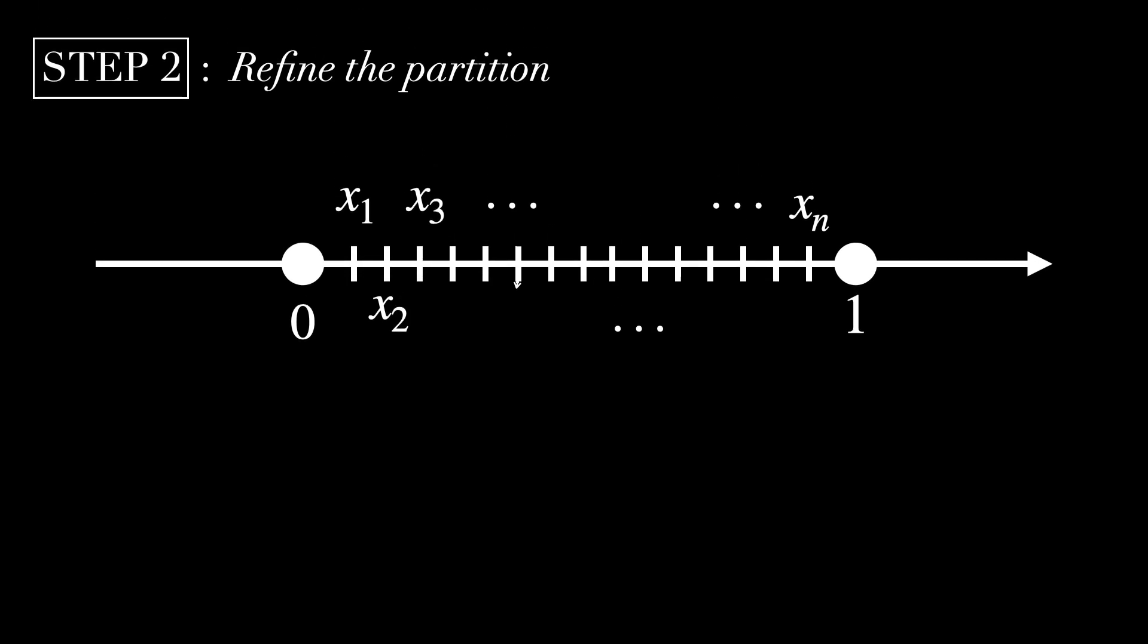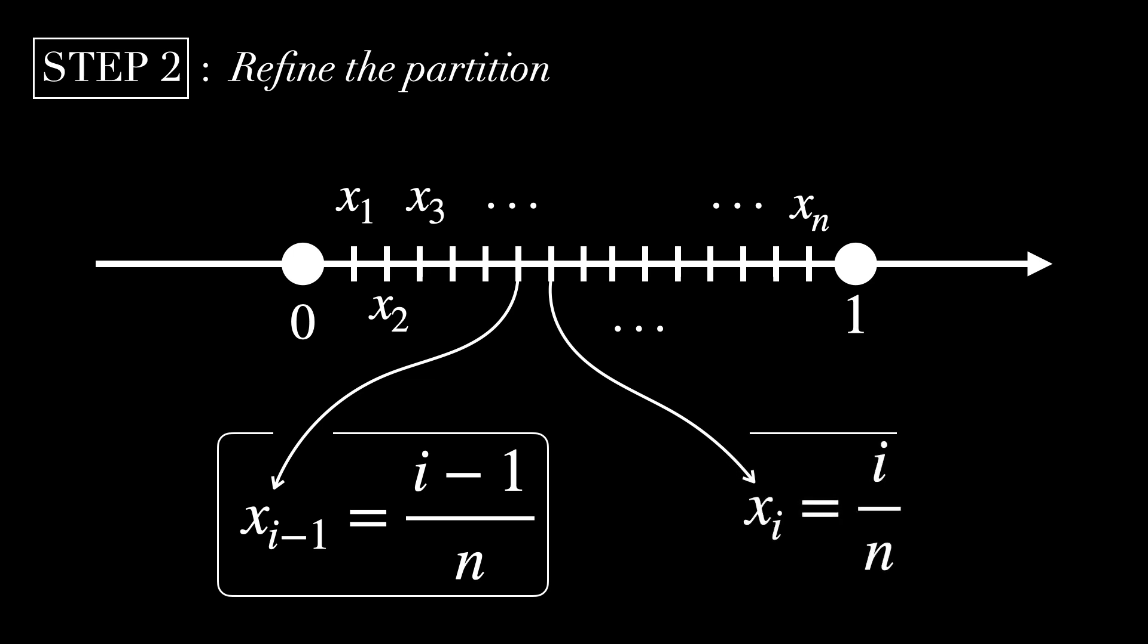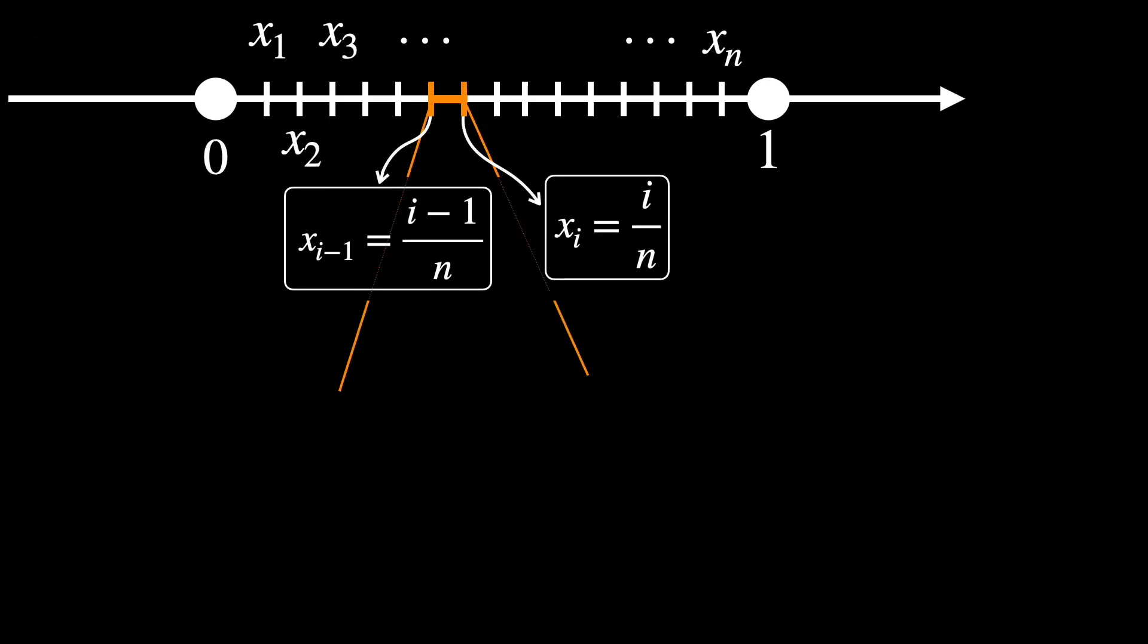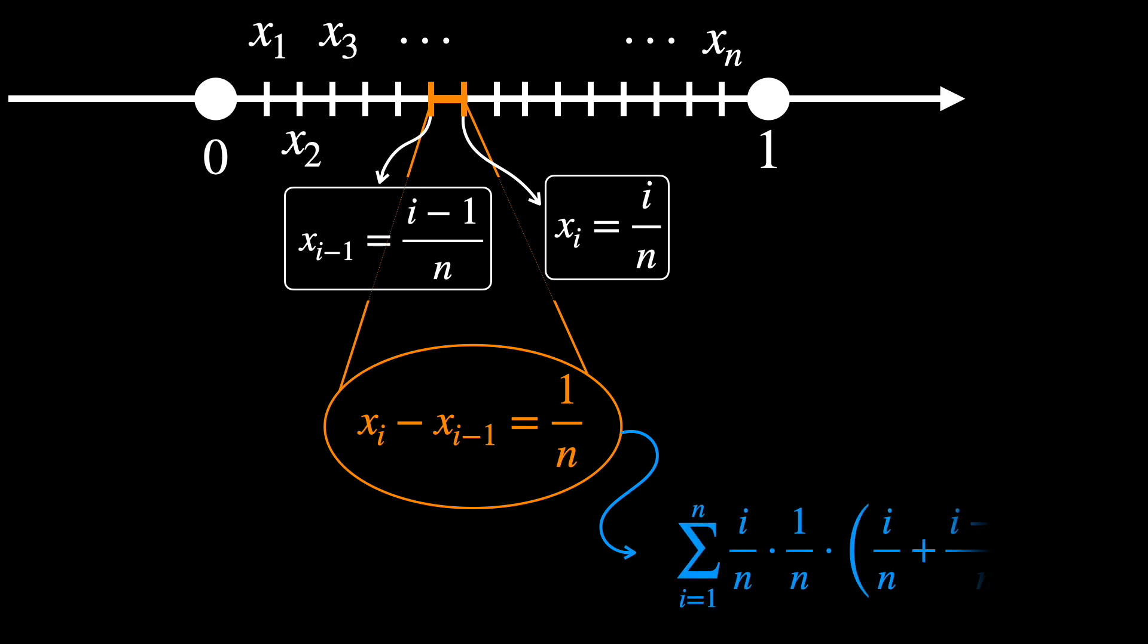Step 2 is to refine the partition. Let the interval [0,1] be partitioned into n equal subintervals. So xᵢ equals i/n and xᵢ₋₁ equals (i-1)/n. Therefore, the width of each subinterval is xᵢ - xᵢ₋₁ equals 1/n. Substituting it into the sum, we get the following.